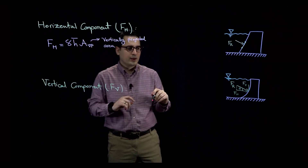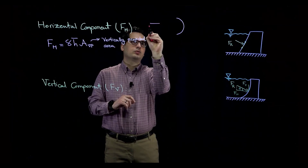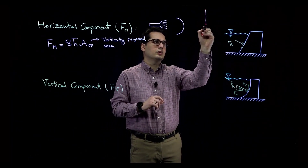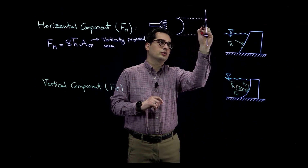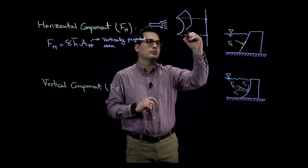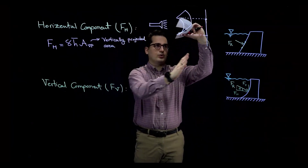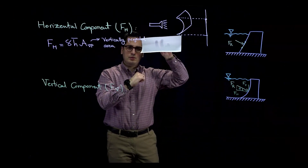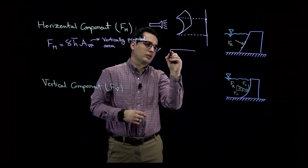Let me define the vertically projected area. If we have a curved surface, and we shine a flashlight horizontally toward a vertical surface, the projection of the curved surface onto that vertical surface is the vertically projected area. For a curved surface like this with light in the horizontal direction and a vertical surface on the side, you would see a rectangular projected area.